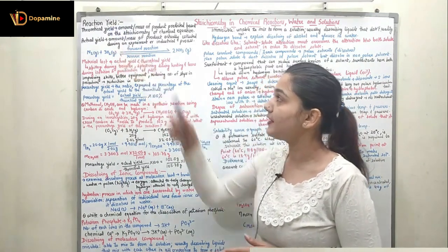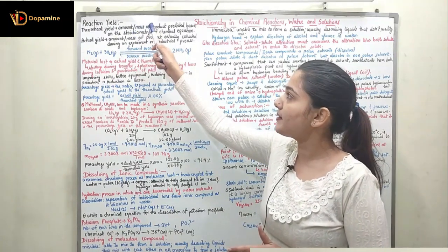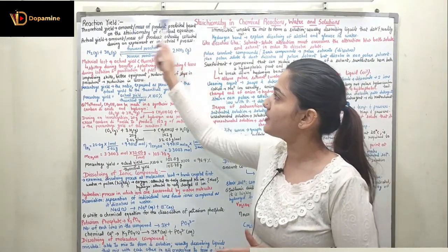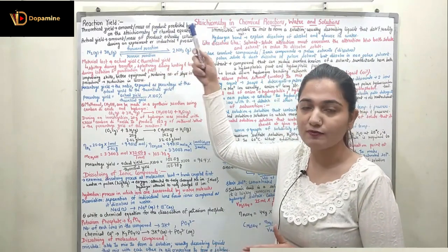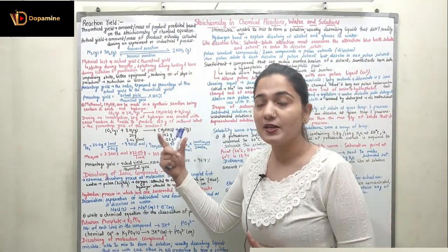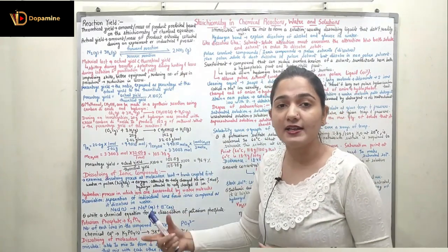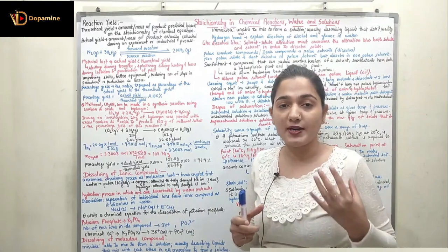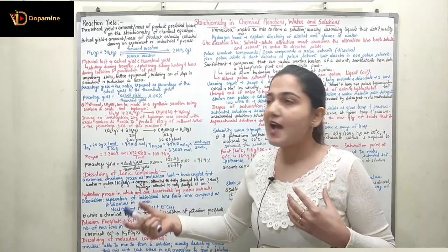First of all, what is the theoretical yield? The theoretical yield is the amount, or mass, of product predicted based on the stoichiometry of the chemical equation. We are going to see the stoichiometry of the chemical equation and determine theoretically what mass or amount of product must be formed for a given reactant.